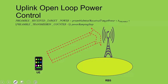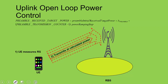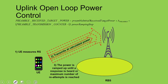Before performing the random access procedure, the UE is already measuring the Reference Signal Received Power (RSRP). Based on that RSRP, it will first calculate a transmit power value and then keep on increasing that power value until a response is heard. This is the simple principle of open-loop power control, and the equation for how it is done is shown on screen.